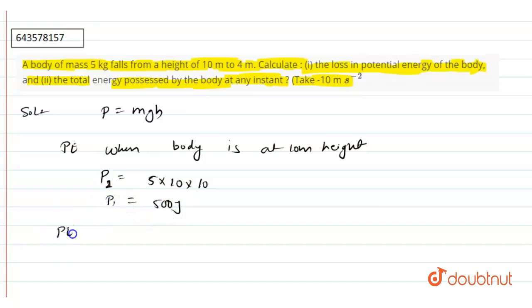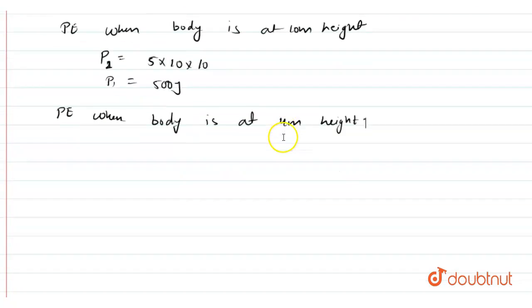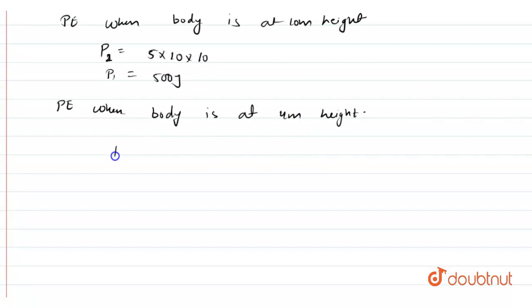Now, potential energy when body is at 4 meter height. Again, we know that potential energy is mgh. So, our P2 will be mass is 5 kg, gravity is 10 and the height is 4 meter. So, it comes out to be 200 Joules.